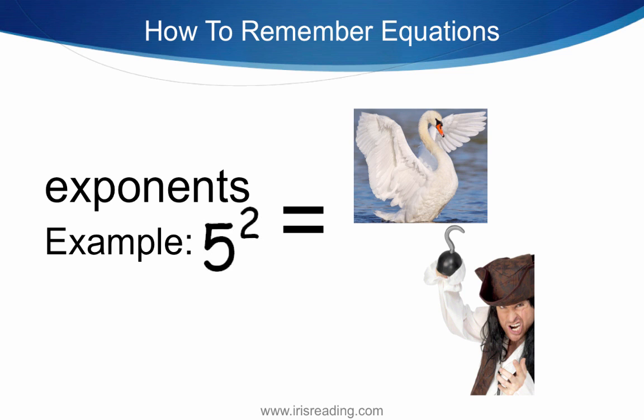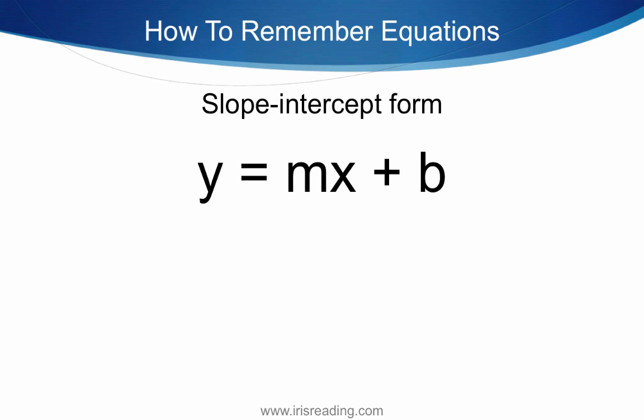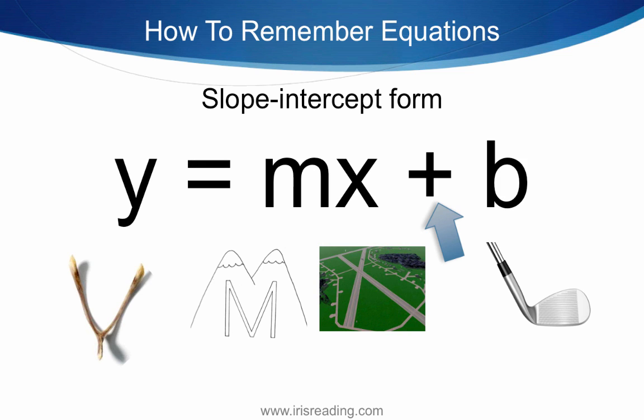If you had slope-intercept form, y equals mx plus b, here are some ideas for how you might turn that into a story. You take your y — you have your wishbone. M could represent something related to mountains, and it also has a similar shape to mountains. X could be runways. The plus sign means something is being stacked on top of something else in the story. And the b, if we assign that to something golf-related, we'd need something golf-related there.